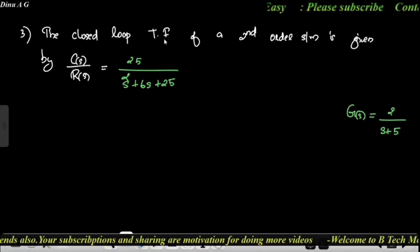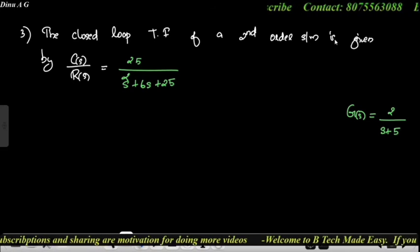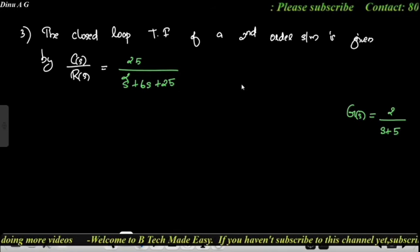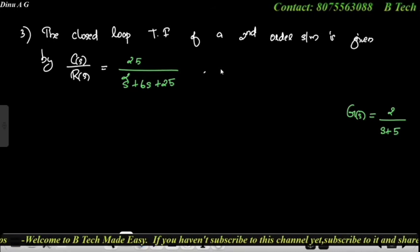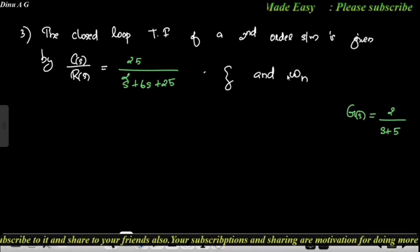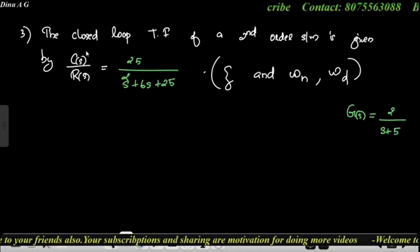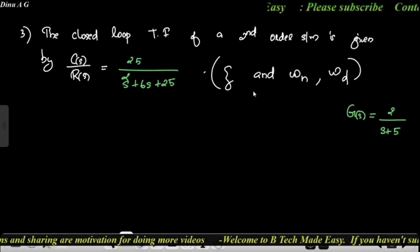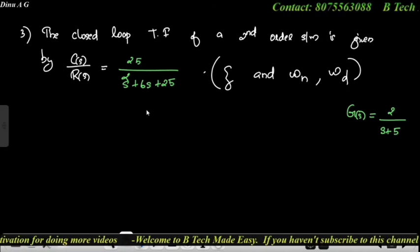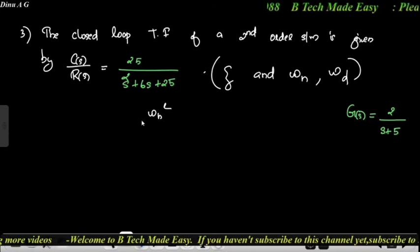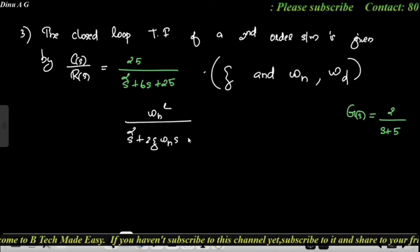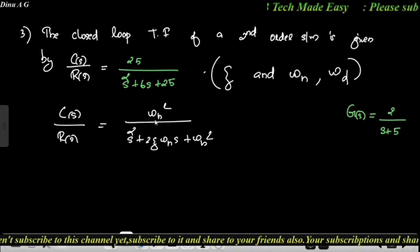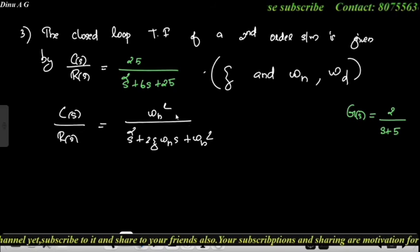Next question: the closed loop transfer function of a second order system is given by C(s)/R(s) = 25 / (s² + 6s + 25). Find the damping ratio ζ, natural frequency ωn, and damped frequency ωd. The general expression for a second order closed loop system is ωn² / (s² + 2ζωn·s + ωn²).